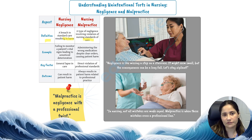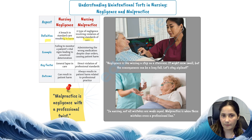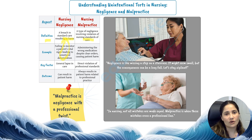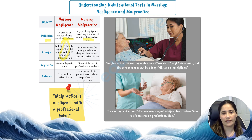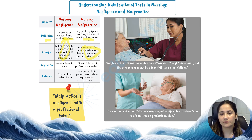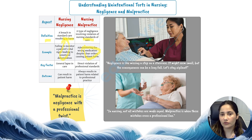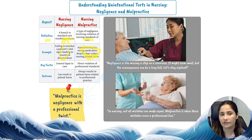Let's discuss some common examples. Imagine a nurse who is very busy and forgets to check a patient's medication, leading to an accidental overdose — this is negligence. Now if a nurse administers a high-risk medication without proper knowledge or ignores safety protocols and the patient is harmed, it escalates to malpractice. Here the error is more specific to the nurse's role — it is professional oversight that leads to harm. Both scenarios show a lack of proper care, but malpractice is directly related to professional responsibilities and knowledge expected of a nurse.